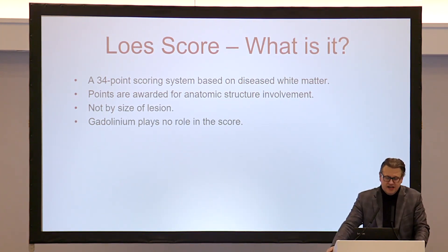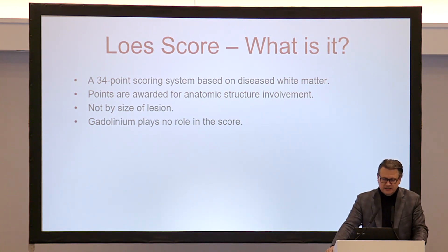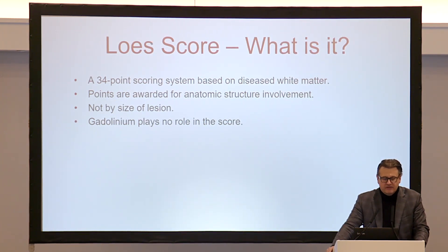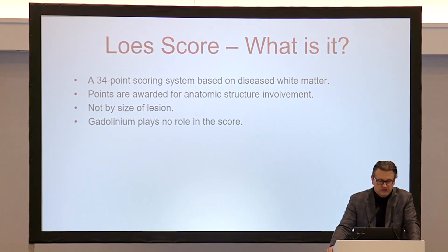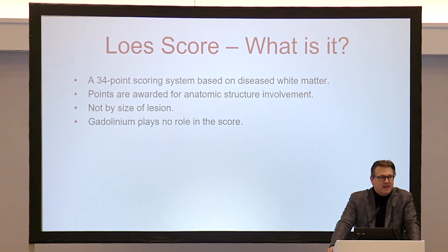We need to talk about the scoring system for the MRIs. Dan Loes developed this at the University of Minnesota in the 90s. It's a 34-point based scoring system based on the amount of diseased white matter. Points are awarded for anatomic structure, not for area — so if you have a small structure you get the same amount of points as a large structure. People often get that mixed up. The gadolinium enhancement doesn't play any role in the scoring system.